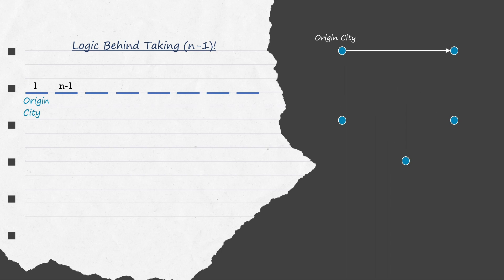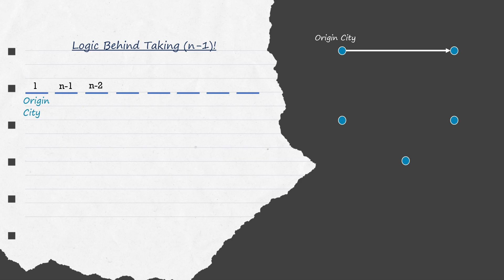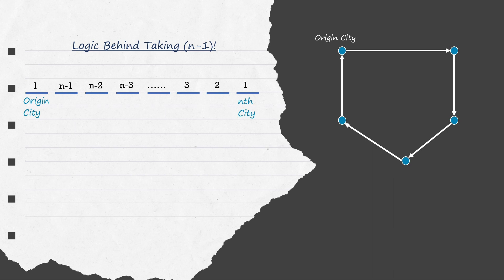As we can see that he has covered two cities, so to traverse to the third city, he has n-2 cities to choose from. Similarly, the number of cities goes on decreasing by 1 as the person traverses. By the end, he is left with only one city to traverse to, i.e. the nth city. And since no city is left to be traversed, the person goes back to the origin. Thus, the total number of possible routes will be calculated by multiplying 1, n-1, n-2 till 1, and thus we get n-1 factorial routes.